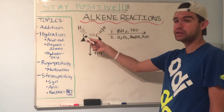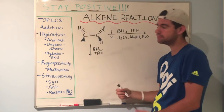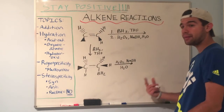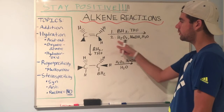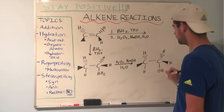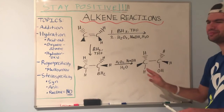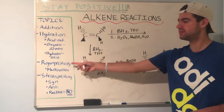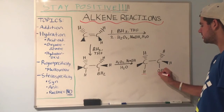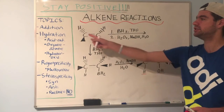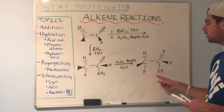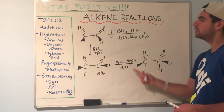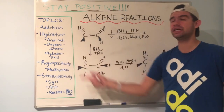First step: this alkene reacts with BH3 and THF to give us an intermediate — notice BH2 instead of BH3. Then this intermediate reacts with H2O2, NaOH, and H2O in the second step to give the final product. This is the H that was added and this is the OH that was added, so yes it is hydration — we added a unit of water across the pi bond. The OH and H are syn to each other: hydroboration-oxidation is syn addition, whereas oxymercuration-demercuration was anti-addition.